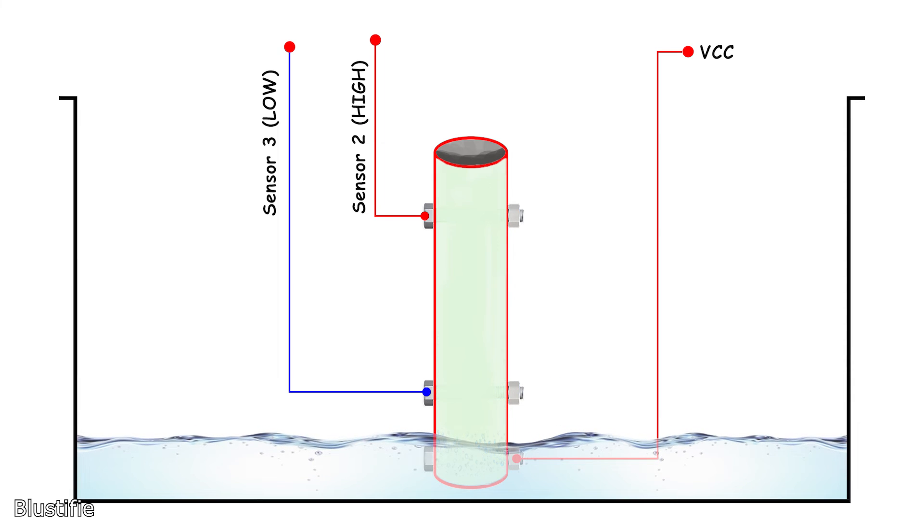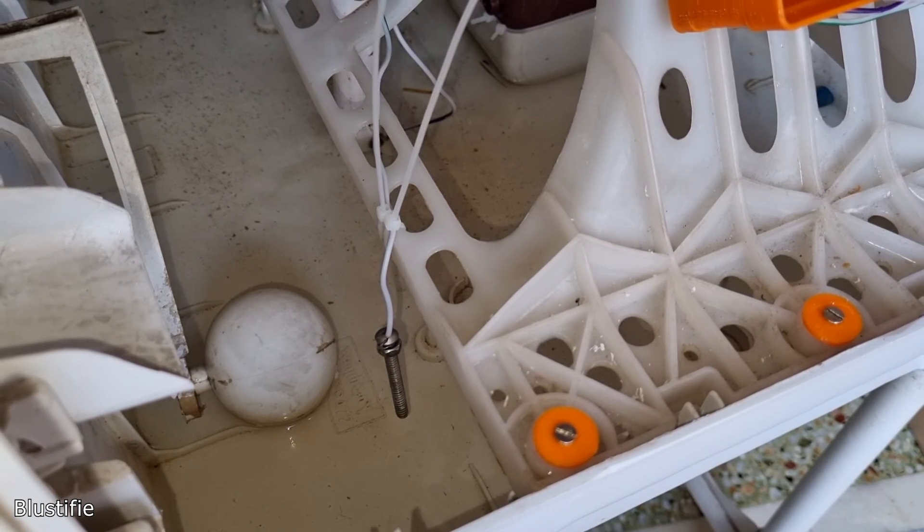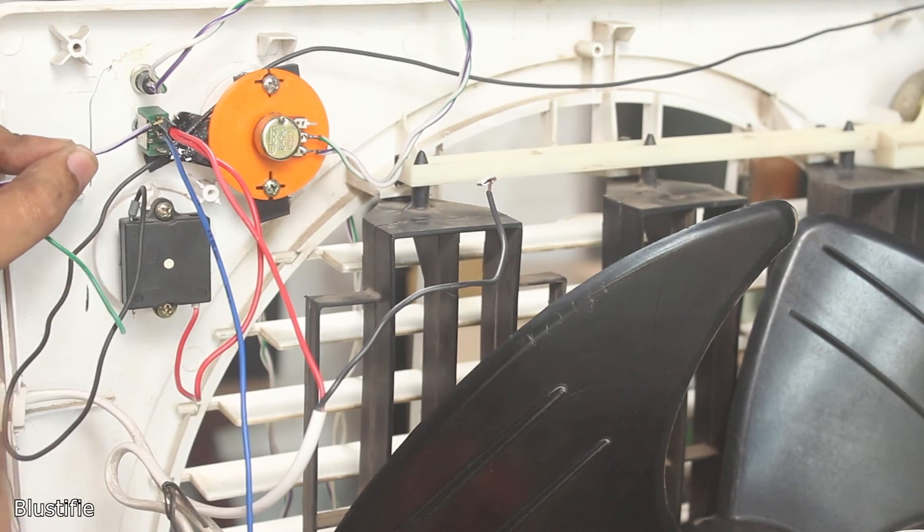To solve this problem, I have separated the water low detection sensor from the pipe constellation. That's it.